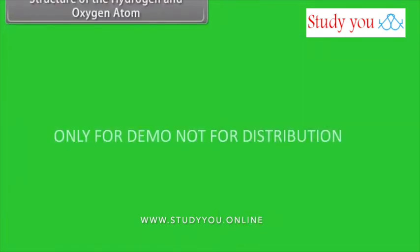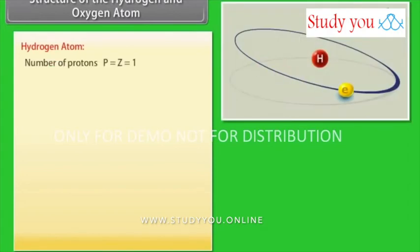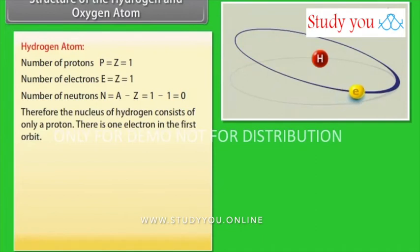Structure of the hydrogen and oxygen atom. Hydrogen atom: Number of protons P equals Z equals 1. Number of electrons E equals Z equals 1. Number of neutrons N equals A minus Z which equals 1 minus 1 which equals 0. Therefore, the nucleus of hydrogen consists of only a proton. There is one electron in the first orbit.